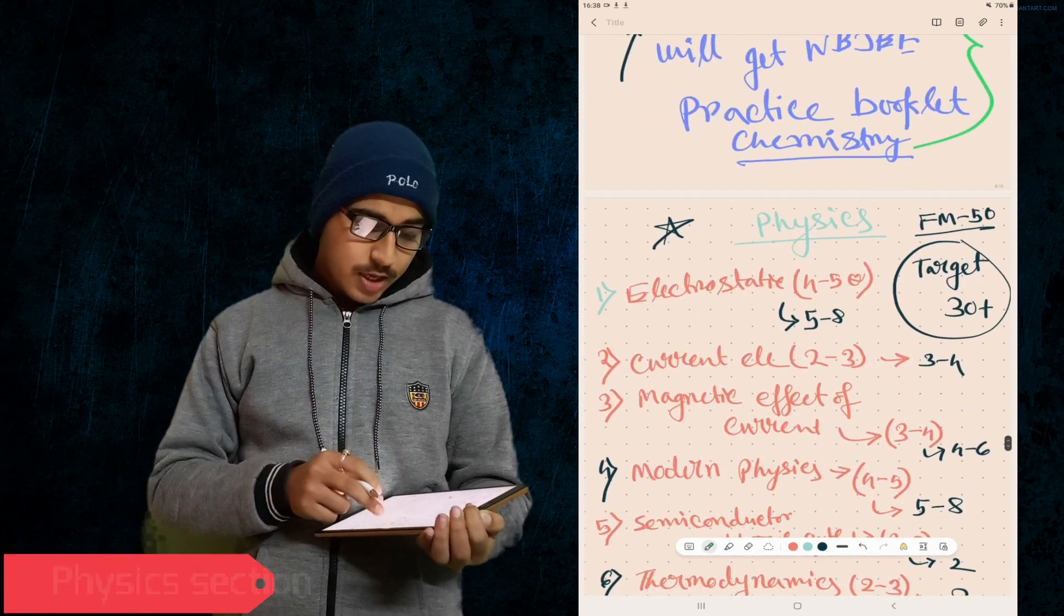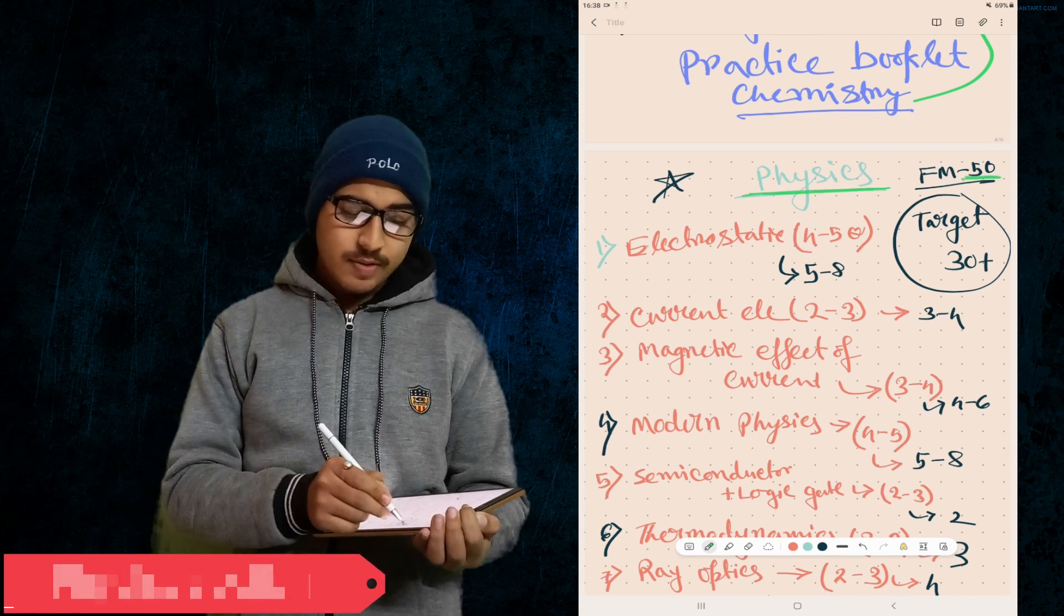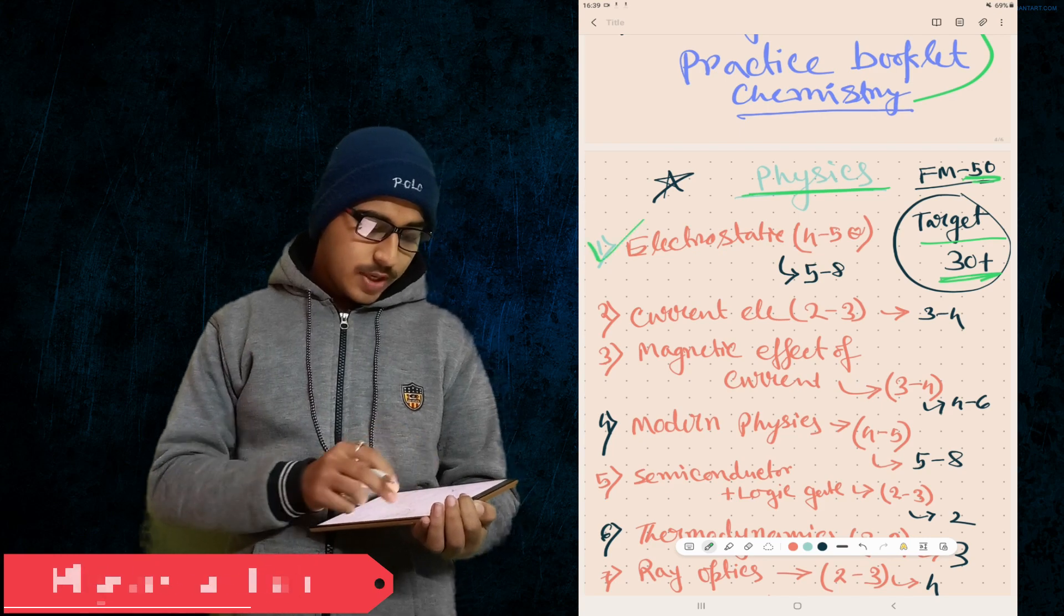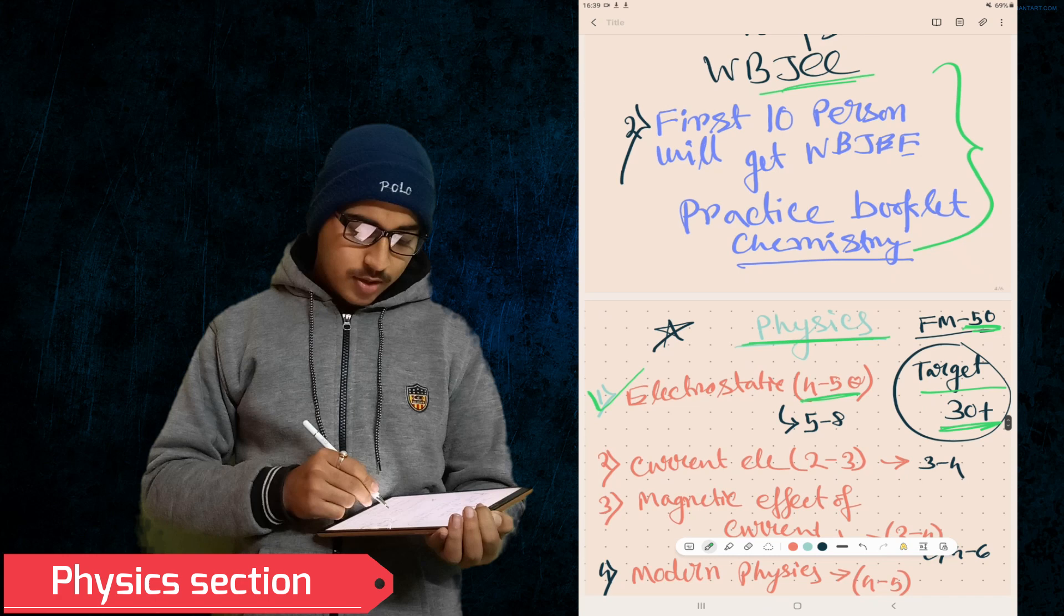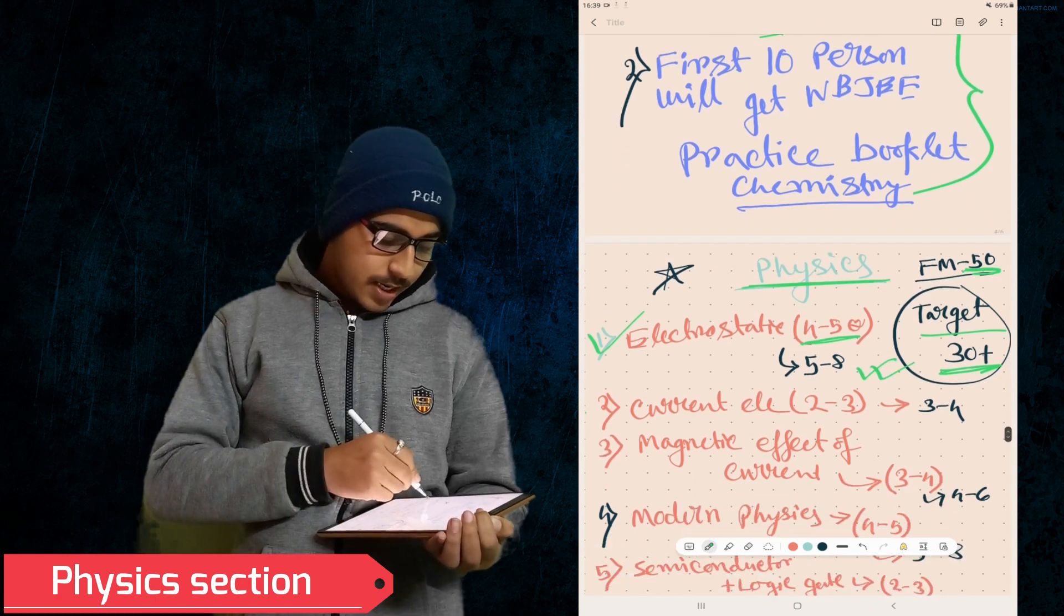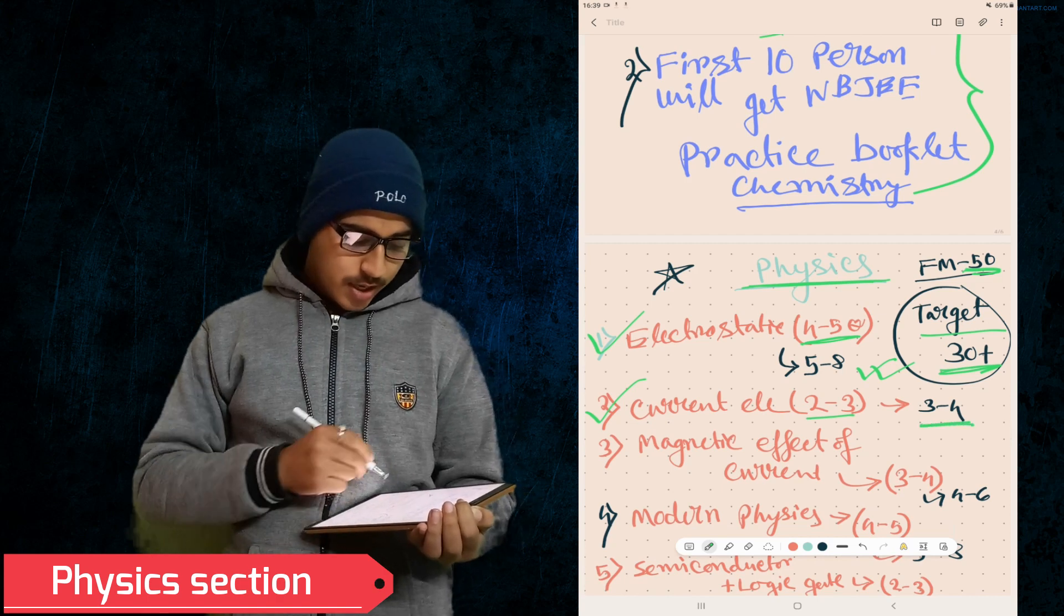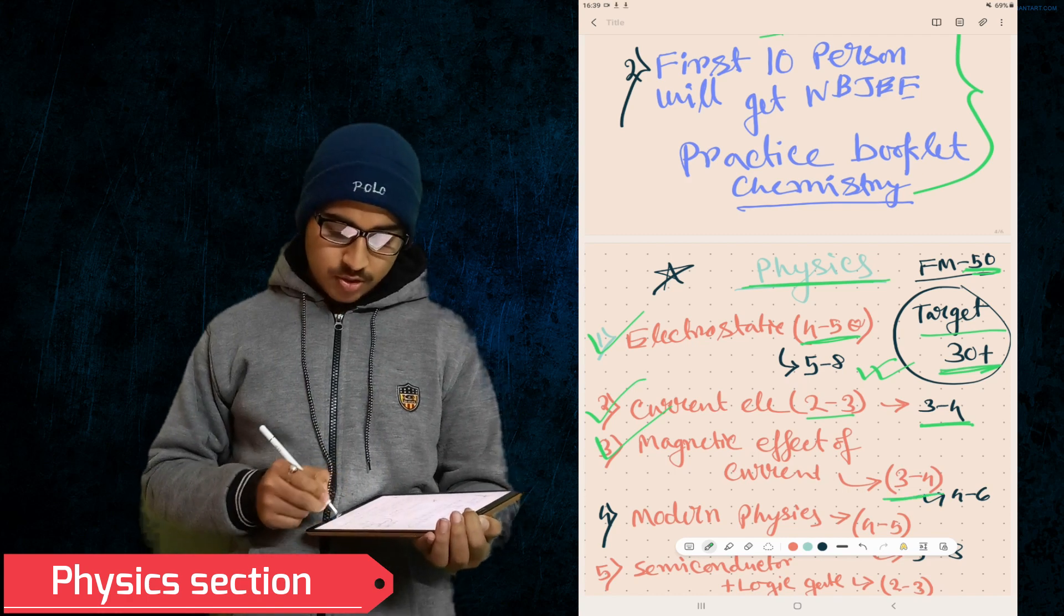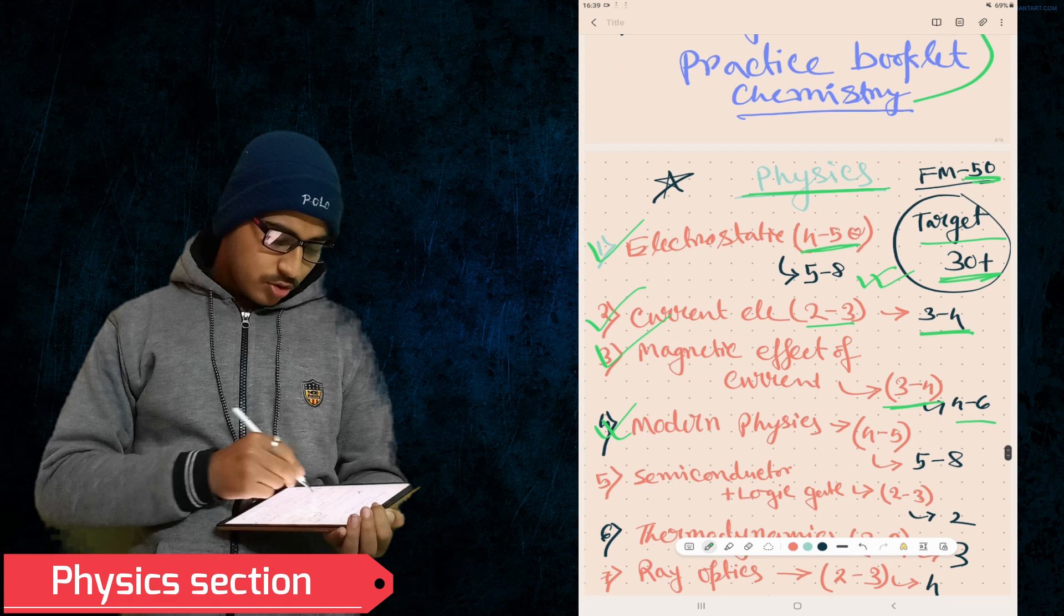Now let's talk about Physics. In Physics also, FM is 50 marks. Our target is 30 marks. First is Electrostatics - four to five questions, so five to eight marks. Current Electricity - two to three questions, three to four marks. Magnetic Effect of Current - also three to four questions, four to six marks.